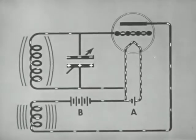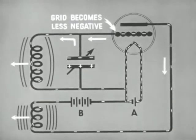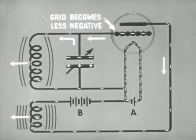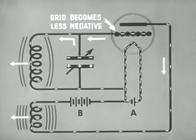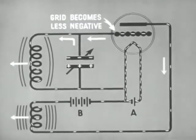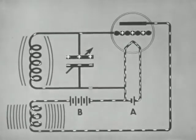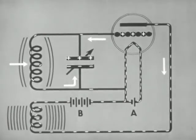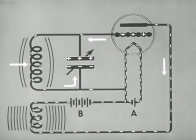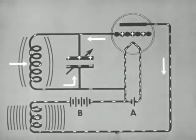As the plate coil field builds up, electrons flow away from the grid. Thus, the grid becomes less negative and more plate current flows. When the plate current reaches maximum, there is no change in the field; hence, no current is induced in the grid coil. The field of the grid coil collapses and helps to charge the condenser.